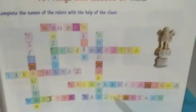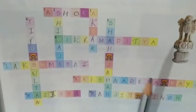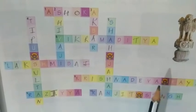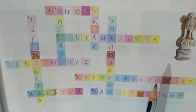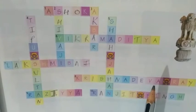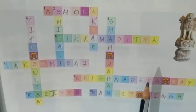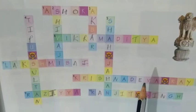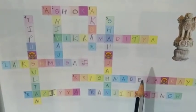So let's recap. Number 1: Ashoka. Number 2: Shivaji. Number 3: Akbar. Number 4: Tipu Sultan. Number 5: Shah Jahan. Number 6: Vikramaditya. Number 7: Lakshmibai. Number 8: Krishnadeva Raya. Number 9: Razia. Number 10: Ranjit Singh.